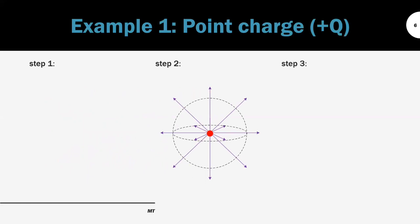In step three, we apply the formula. The area here is the area of the Gaussian surface, which is 4 pi r squared. In the end, we get the formula E equal to Q divided by 4 pi epsilon r squared, which is the same as the previous video.